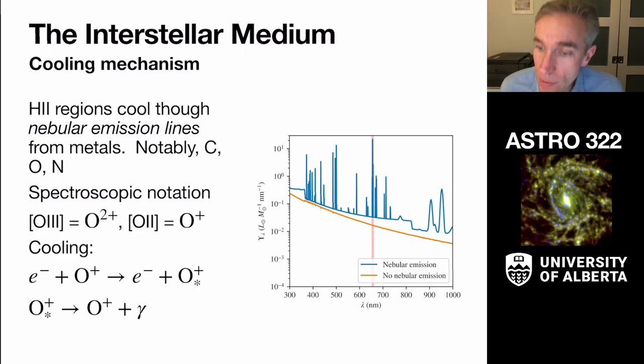I'll remind you that we are going to be operating with spectroscopic notation here. So when I say that I have brackets O3, that's referring to an oxygen atom that has been twice ionized, so doubly ionized oxygen. O2 is a single ionization stage.